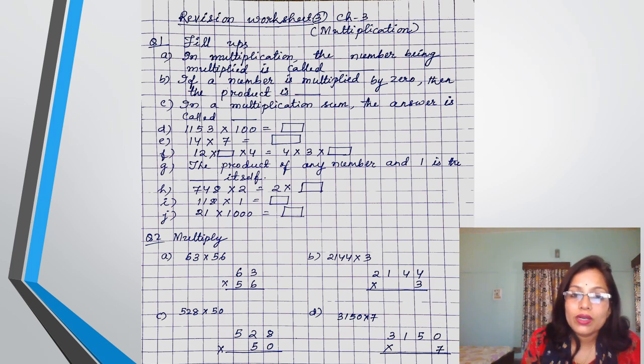Then G, the product of any number and 1. If 1 is multiplied to any number, what will we get? Next, 748 multiplied by 2 is equal to 2 multiplied by thus. Next, 118 multiplied by 1 is equal to thus.